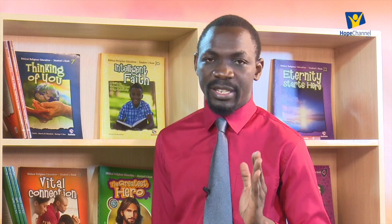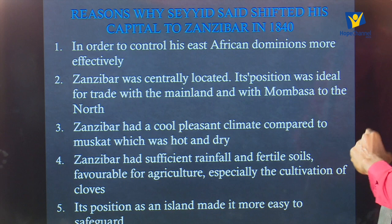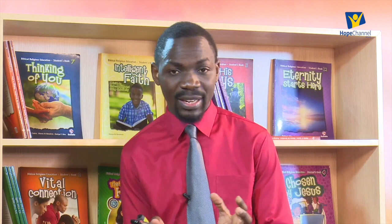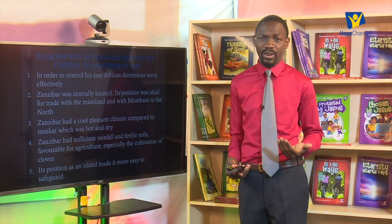Number two, Zanzibar was centrally located — a position of strategic importance. Its position was ideal for trade with the mainland and with Mombasa to the north. If you look at an atlas, you realize Zanzibar is more centrally placed as opposed to Muscat, which is far out of East Africa. That is number two for why he transferred his capital.